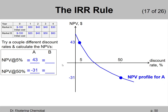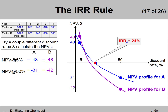When we do the same thing for Project B, at a 5% discount rate, Project B's net present value is $48 million. At a 50% discount rate, Project B's net present value is negative $42 million. We connect those two points to get the NPV profile for B. The NPV profile for A is the blue line and for B is the purple line. The internal rate of return for Project A is 24%, and for Project B it is 21%.